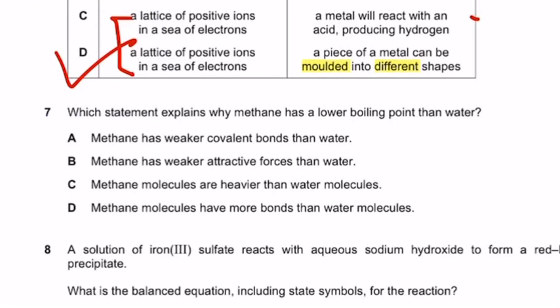Question number 7: Which statement explains why methane has low boiling point than water? Let us see the answer. Option A: Methane has weaker covalent bond than water. Option B: Methane has weaker attractive forces than water. C: Methane molecules are heavier than water molecules and methane molecules have more bonds than water molecules. The lower boiling point of methane is actually due to weaker attractive forces than water. So correct answer will be B. Because both methane and water are bonded by covalent bond. But it is not that methane has weaker covalent bond. It should be methane has weaker attractive forces than water.